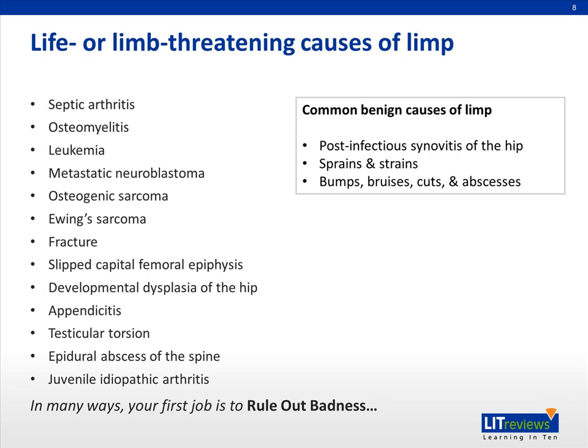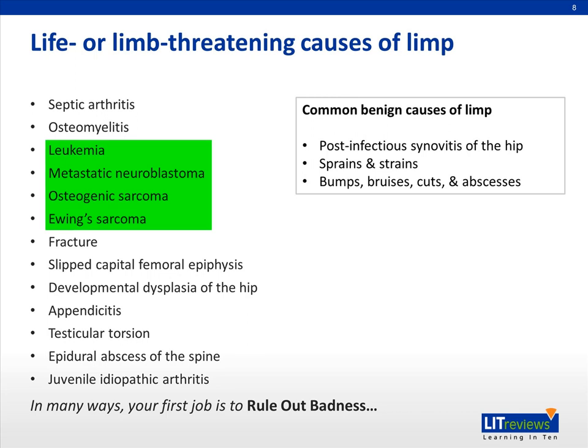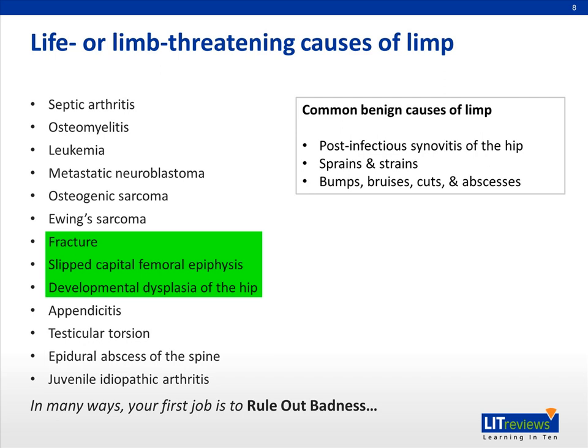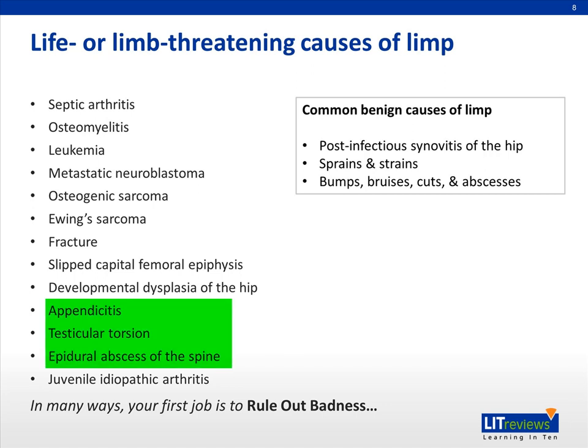When trying to diagnose limp in a child, it's important to first consider the life- or limb-threatening causes of limp. These include severe infections like septic arthritis or osteomyelitis, cancers including leukemia, metastatic neuroblastoma, and primary bone tumors. It also includes fractures and developmental disorders such as SCFE or developmental dysplasia of the hip. There are also conditions that can cause referred pain to the hip or to the knee, such as appendicitis, testicular torsion, or an abscess in the epidural space.